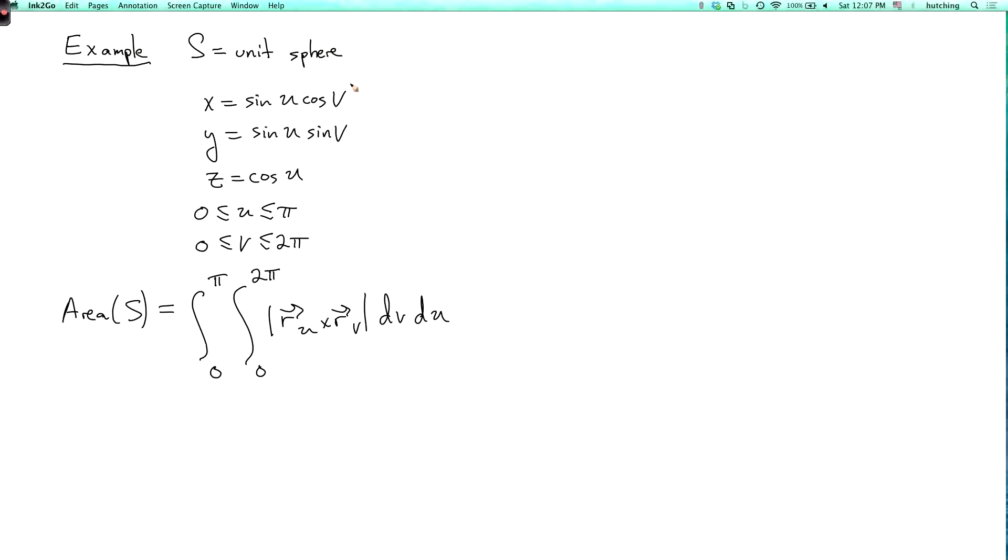So r_u, so we differentiate these equations with respect to u and v. So r_u is cosine u cosine v. That's the derivative of x with respect to u. Then the derivative of y with respect to u is cosine u sine v. And the derivative of z with respect to u is minus sine u.